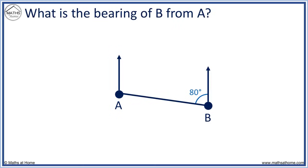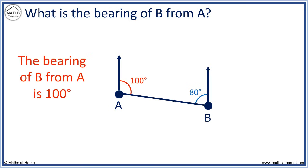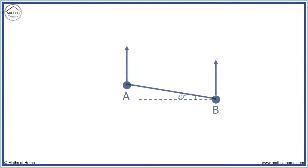What is the bearing of B from A? We require this angle — 80 degrees and this angle must add to 180 degrees. The bearing of B from A is 100 degrees.